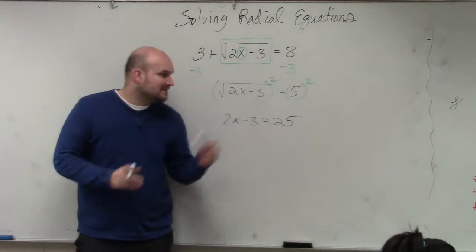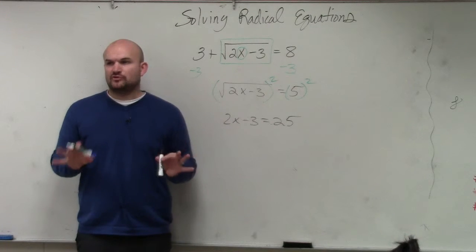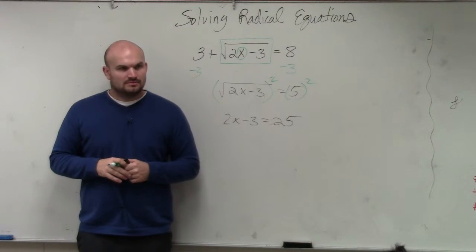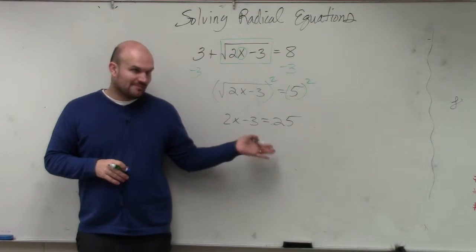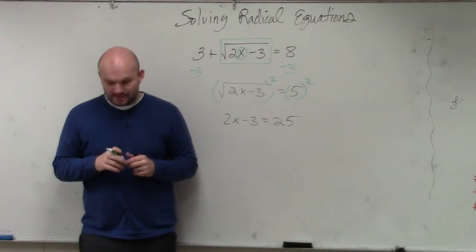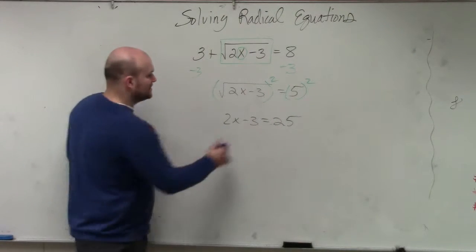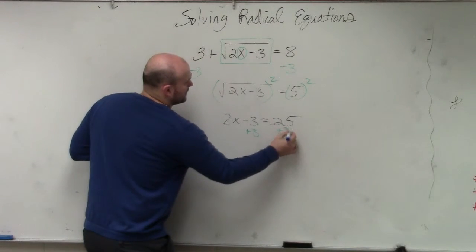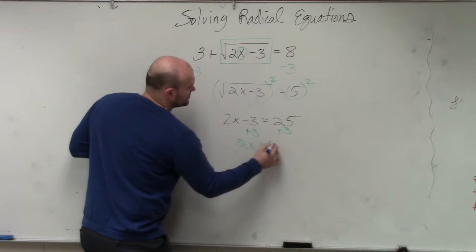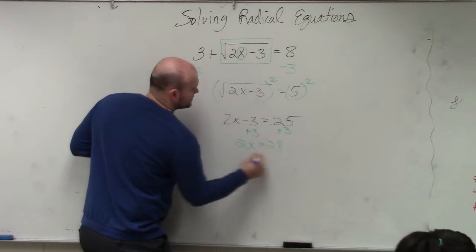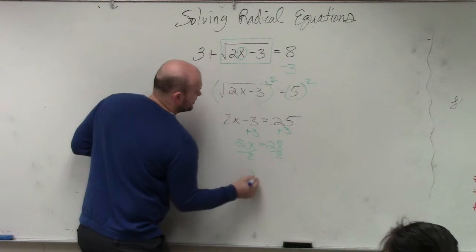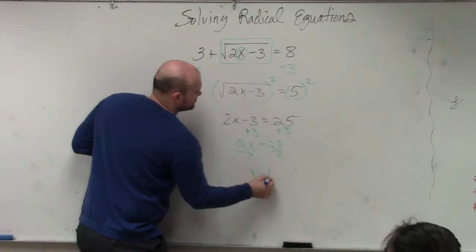Now it's a more familiar area for you guys. Do you feel more comfortable solving from here? So we just add 3. Then you have 2x equals 28, divide by 2 on both sides — x equals 14.